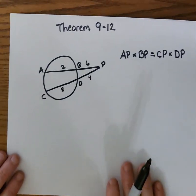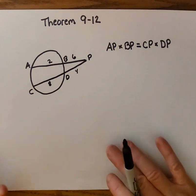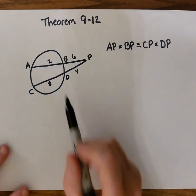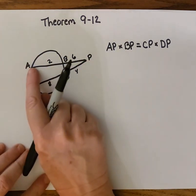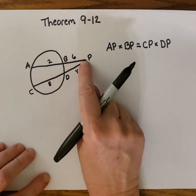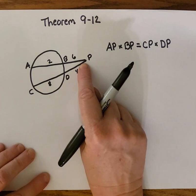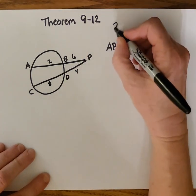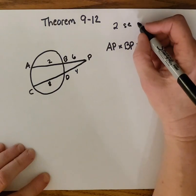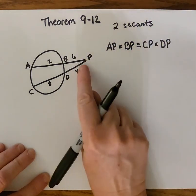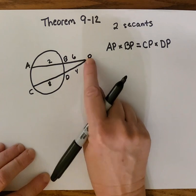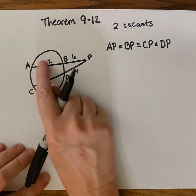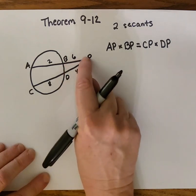We'll do practice with that in a moment. Now this is different — this is not two chords inside a circle. This is something meeting outside of the circle. This is a secant, which is just a chord that extends beyond the circle, and here is another secant. Theorem 9-12 says that when two secants are drawn to a circle and meet at an outside point, then the product of one whole secant and its external segment equals the product of the other secant and its external segment.